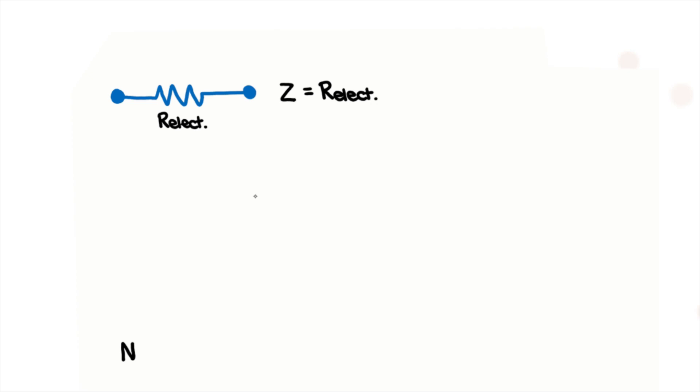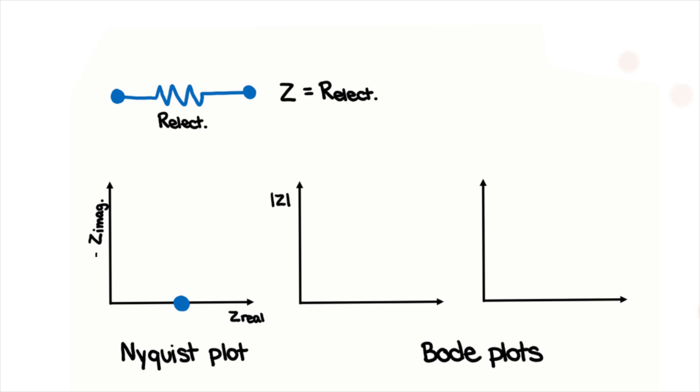In this case, the Nyquist plot would just be a point on the real axis, and the Bode plots would be horizontal lines.